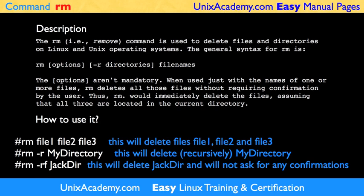The options in the command's format are not mandatory. When used just with the names of one or more files, RM deletes all those files without requiring confirmation by the user. It means that the RM command would immediately delete the files. If the files are located in the same directory, only file names are required; otherwise you must specify the path to the files' locations. Error messages are returned if a file does not exist or if the user does not have the appropriate permission to delete it.